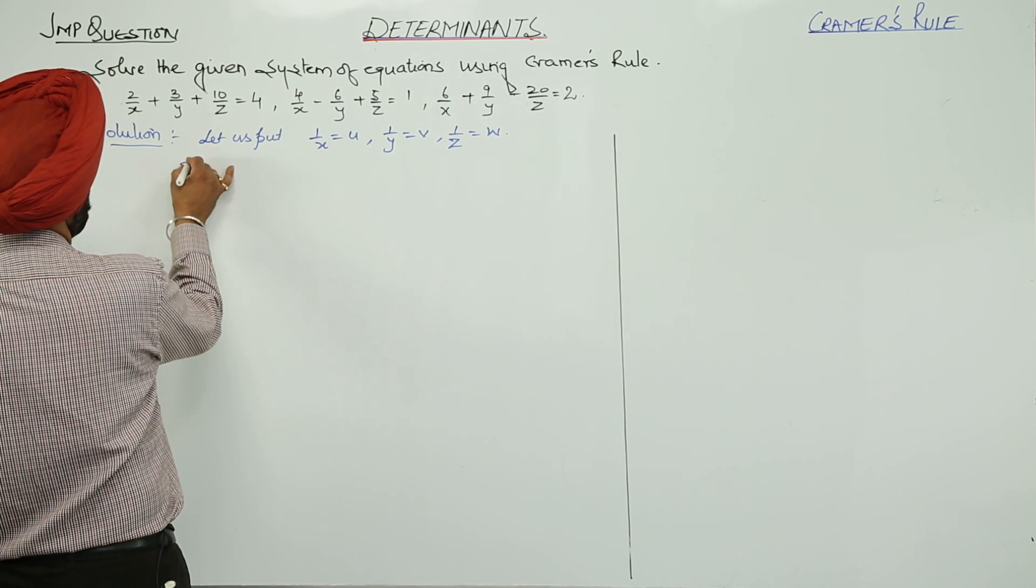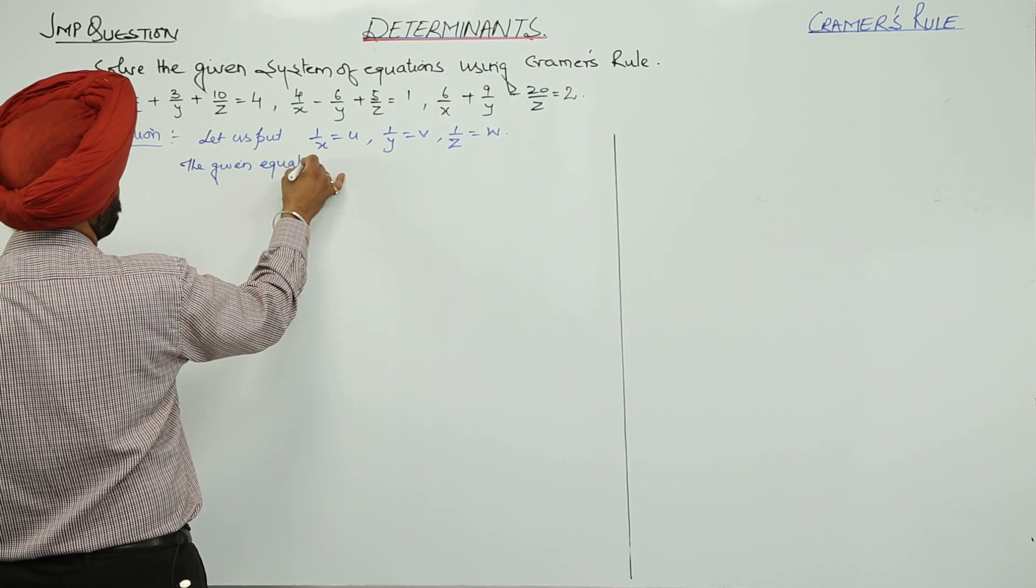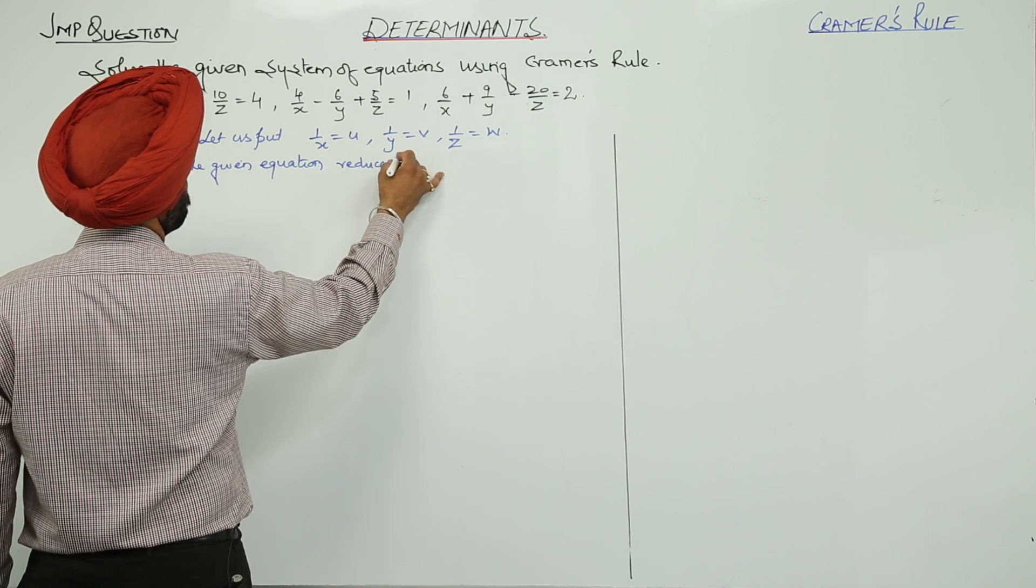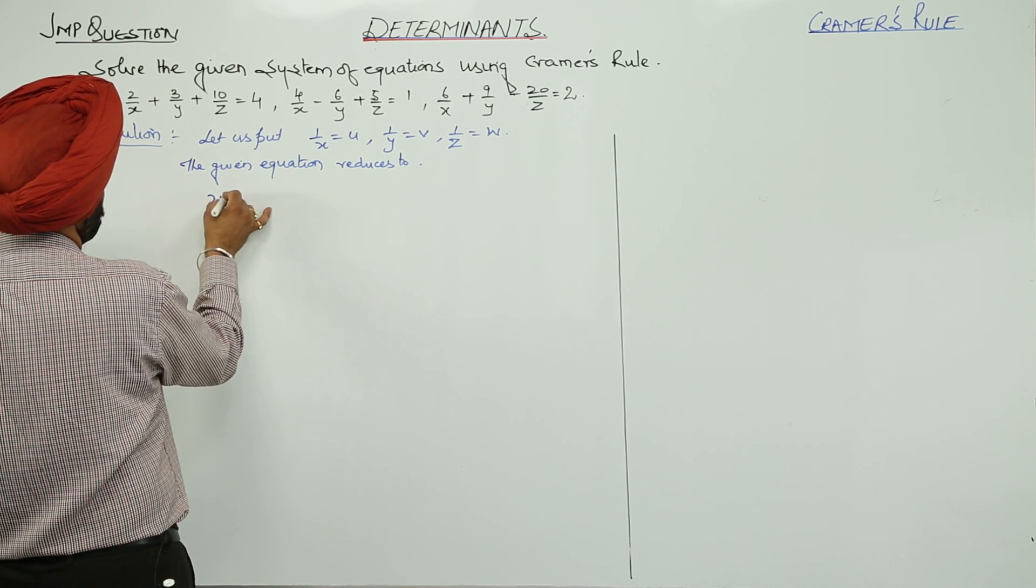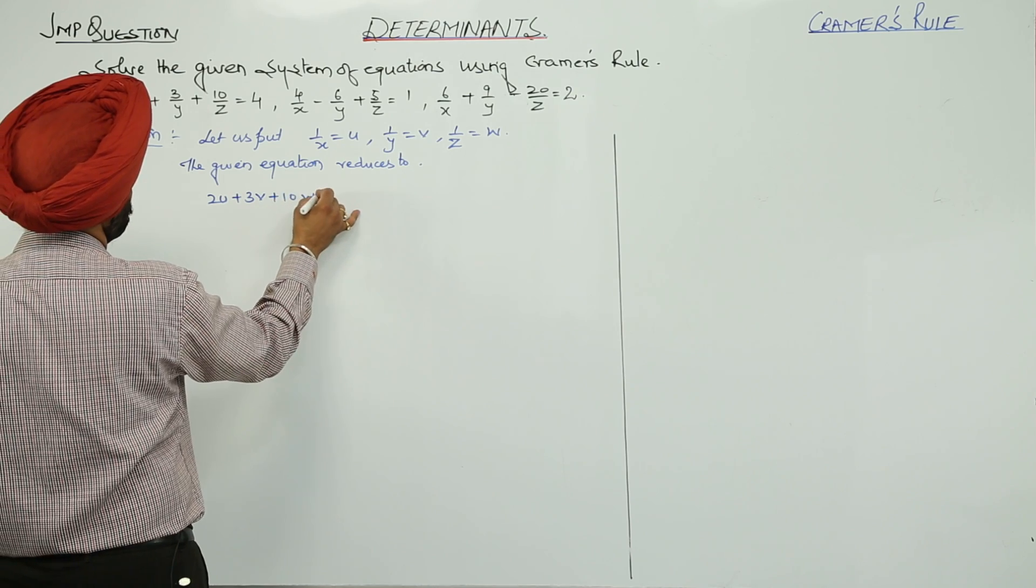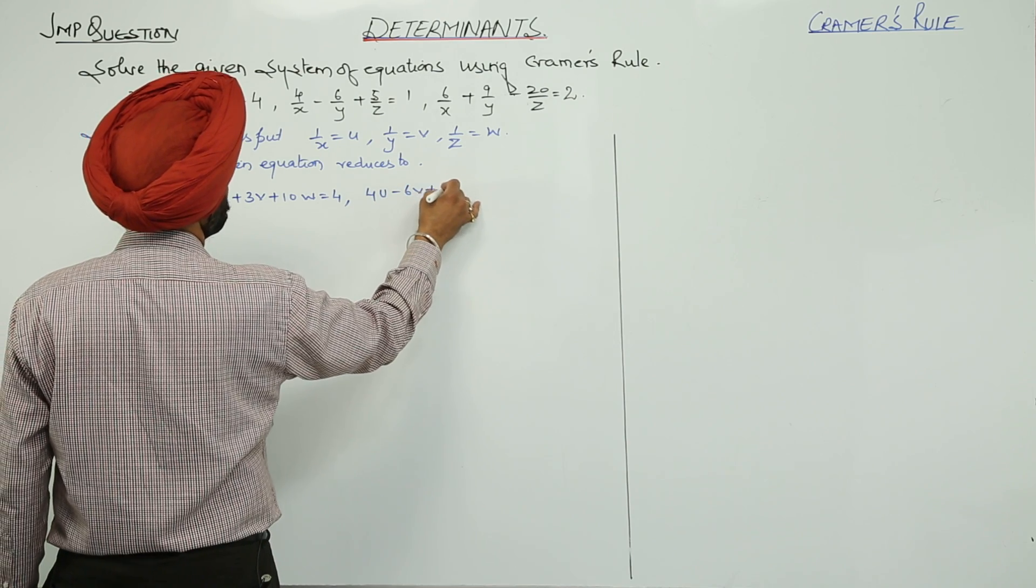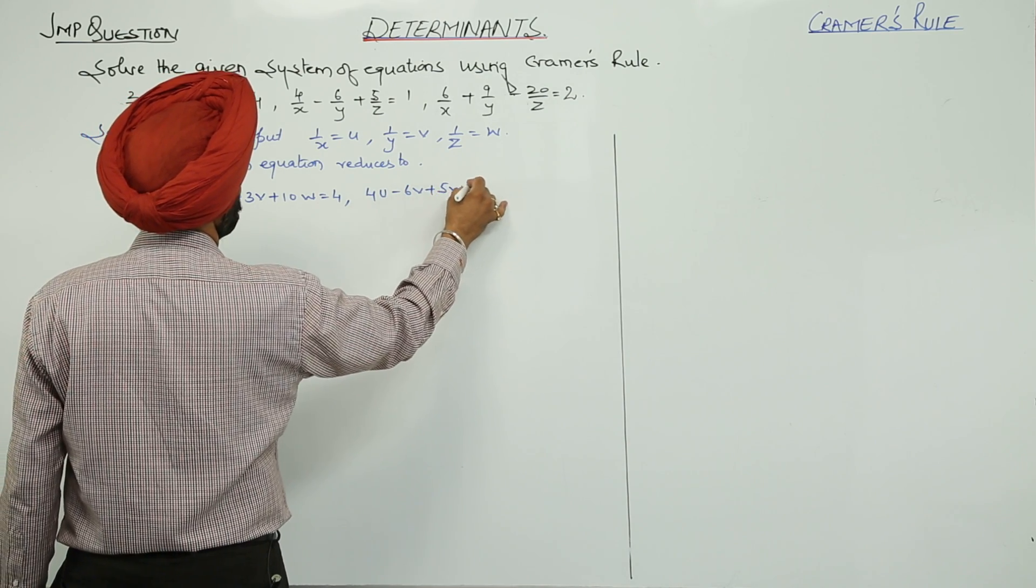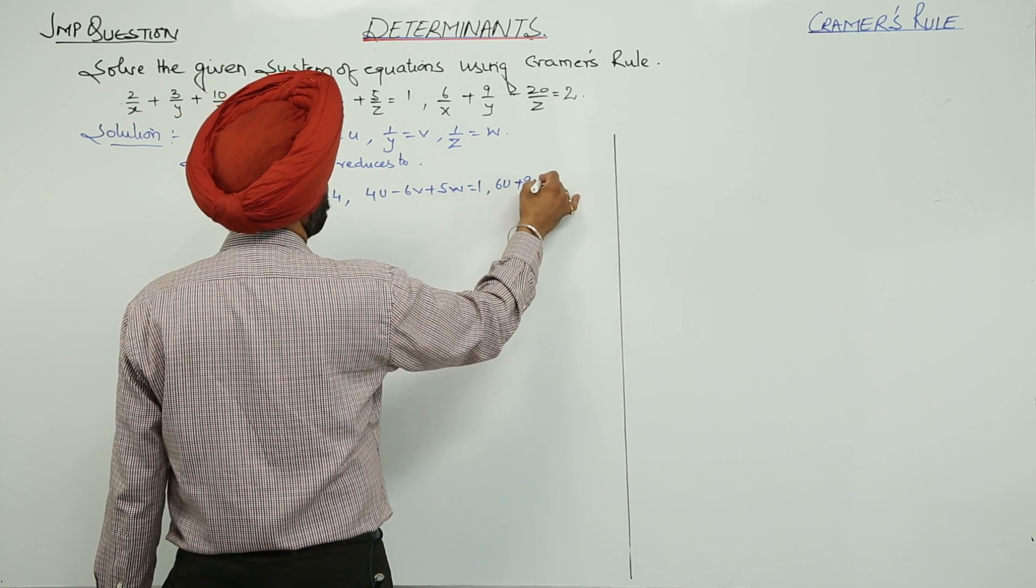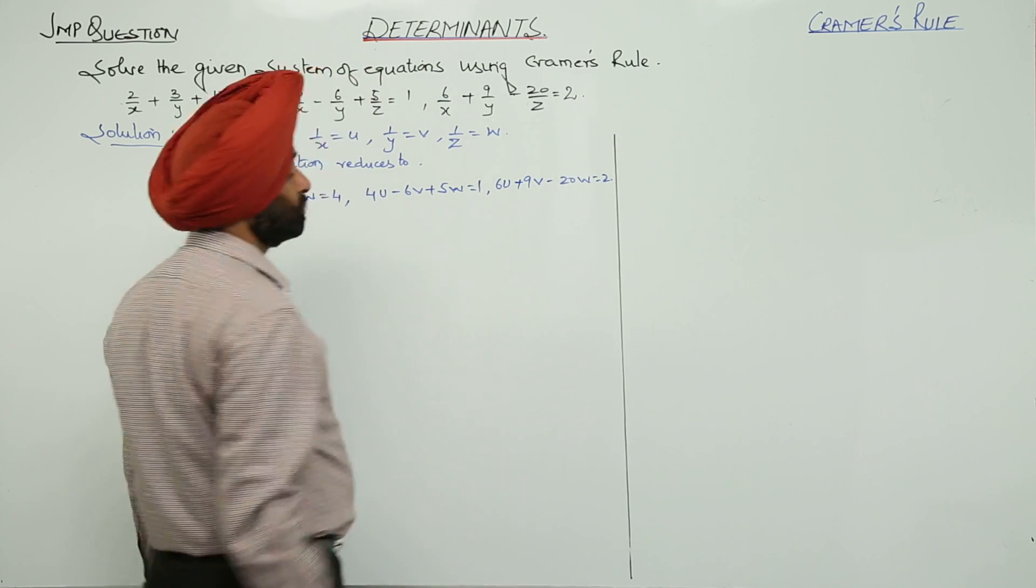Now, the given equations reduce to 2u plus 3v plus 10w is equal to 4, 4u minus 6v plus 5w is equal to 1, and 6u plus 9v minus 20w is equal to 2.